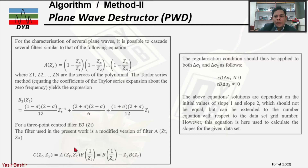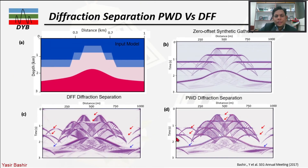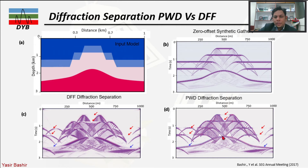The second method, from Fomel (2002), uses slope identification based on Plane Wave Destruction (PWD). Comparing the two methods: in DFF the reflection is removed, but a slightly dipping reflector was not recognized as a reflection and was kept. In PWD, only the dipping reflector is kept while the horizontal reflector is correctly removed — making PWD more accurate for dipping structures.